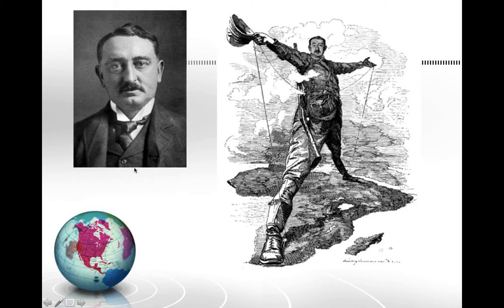Cecil Rhodes is very controversial today. There is a statue of him at Oxford University, and many people feel it should be taken down because he was an imperialist who believed the white race was superior. This is comparable to debates in the United States over statues of Robert E. Lee and the Confederacy. From what I've read recently, they are going to let the statue stand at Oxford University.